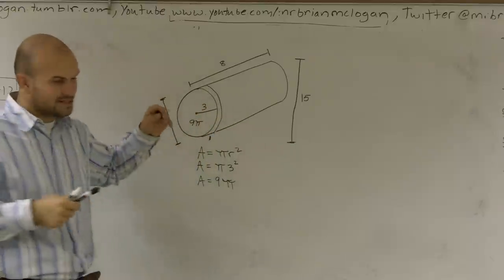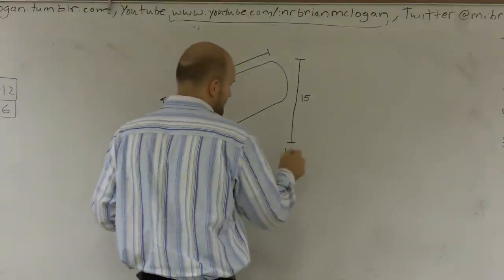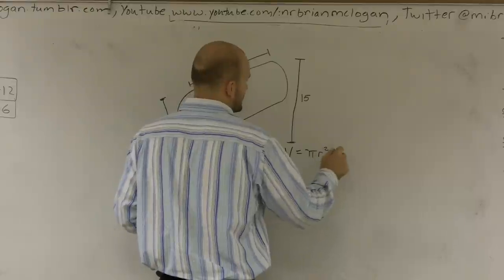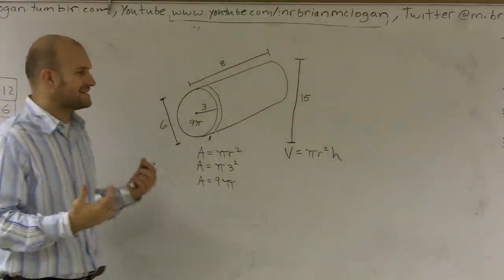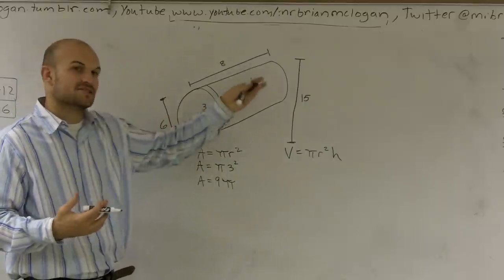Although what happens is, if you can see, is for volume of a cylinder, that is pi r squared times height. Well, why is it times height? Well, because what we're going to do is we're going to multiply by how many slices we have.